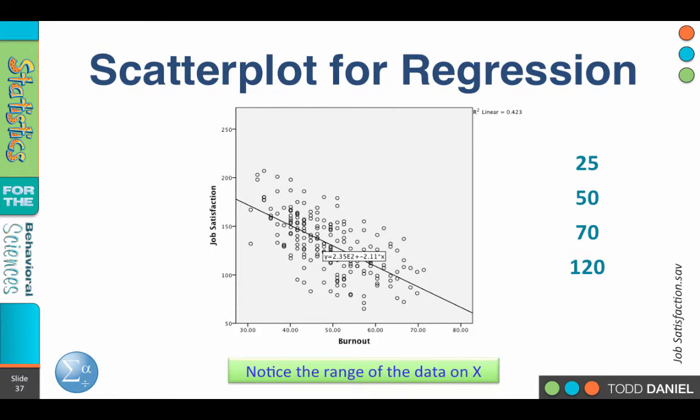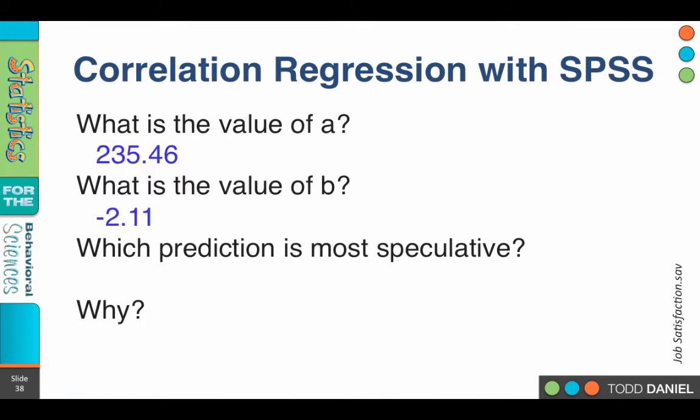120. That was far outside of the range. In fact, the predicted value was negative. How can you have negative job satisfaction? I mean, you could have low job satisfaction or no job satisfaction, but negative job satisfaction? Does that mean at a certain point you start getting happier again? That makes absolutely no sense. So what prediction was most speculative? The value of 120.